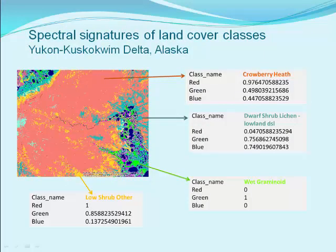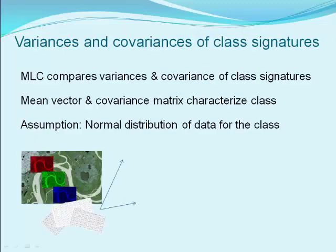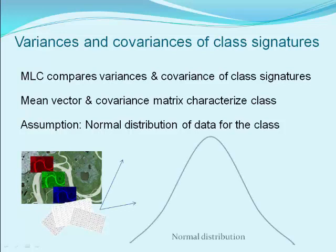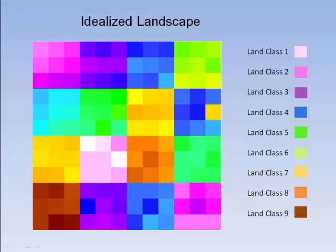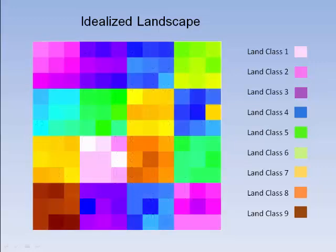These are typical spectral signatures of some land cover classes from the Yukon Kuskokwim Delta of Alaska. MLC uses variances and covariances in class signatures as a basis for deciding on a cell's membership. Training samples are expected to encompass much of the variability for a cover class. Consider an idealized landscape where there are nine land cover classes distributed in blocks. Each land class is represented by a different color.